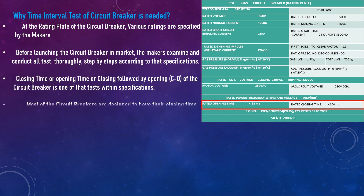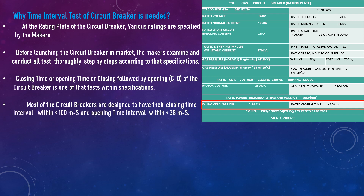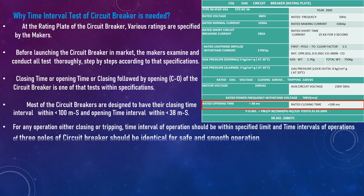Most circuit breakers are designed to have their closing time interval within 100 milliseconds and opening time interval within 38 milliseconds. For any operation — either closing or tripping — the time interval of operation should be within the specified limit, and time intervals of operation of all three poles of the circuit breaker should be identical.